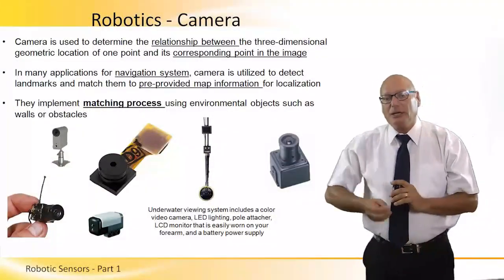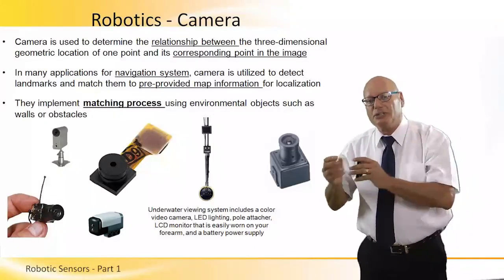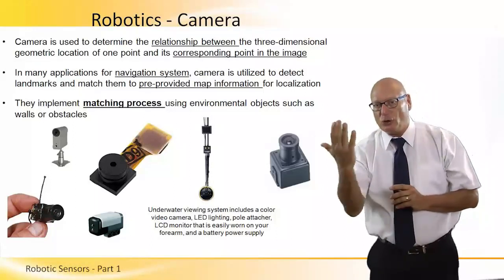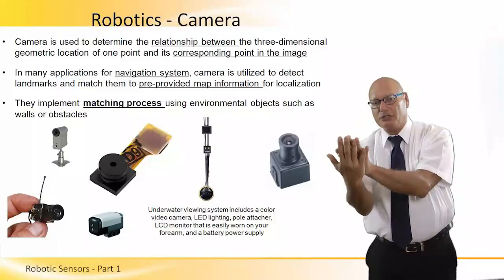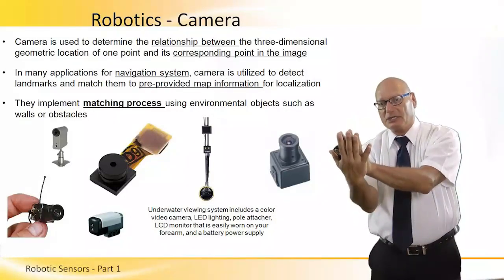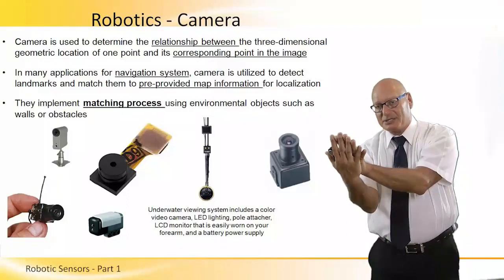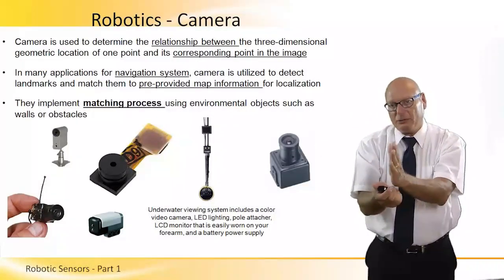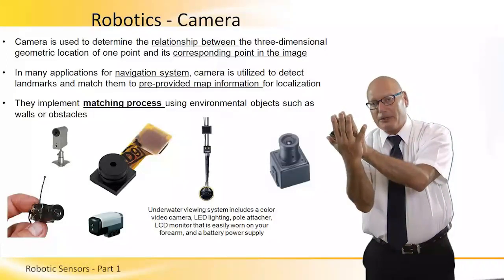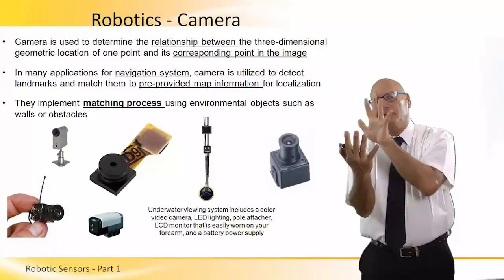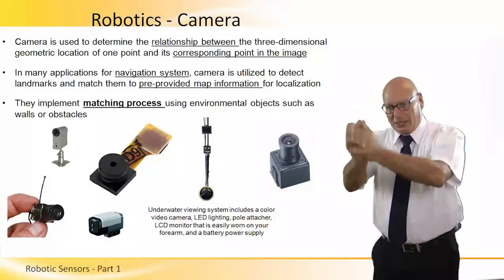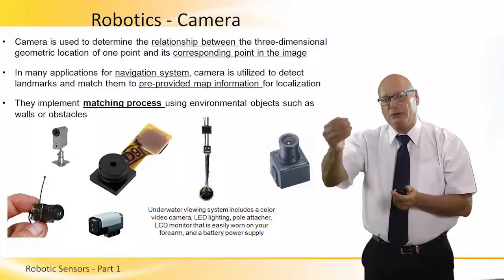Camera. A camera is used to determine the relationship between a three-dimensional geometric location of a point and its corresponding point in the image. We talked before about a nominal picture stored in memory — the actual picture is compared and superimposed on that. If they are identical, we know exactly what we're looking at. If there is a mismatch, we know exactly what to do — either move one side, move another side, get further away or closer. We're looking for full superimposition of actual on top of nominal. Comparing an actual picture to a nominal picture tells the controller exactly where the robot is looking in order to direct it on what to do next.